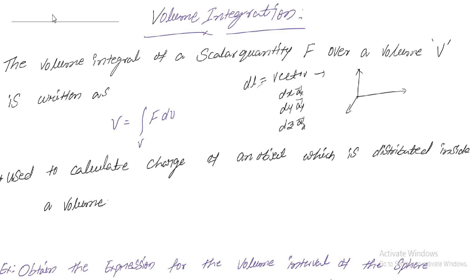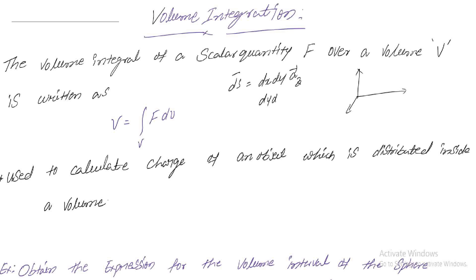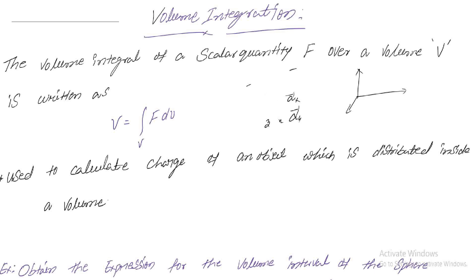Similarly, differential area is a vector. For Cartesian coordinates, dS = dx·dy (normal direction āz), or dy·dz (normal direction āx), or dz·dx (normal direction āy). A scalar value multiplied by a direction unit vector gives a vector. However, the differential volume DV = dx·dy·dz — it is not multiplied by any unit vector, so differential volume is a scalar. Remember: differential length is a vector, differential surface is a vector, and differential volume is a scalar.